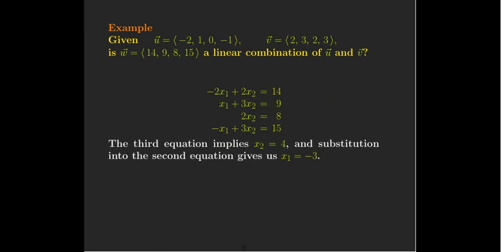That gives us a system of equations. I have four equations and two unknowns. Now this system of equations doesn't seem to be too difficult because the third equation is very easy to solve. And I get x2 equals 4. And then I just chose the second equation. I did a substitution. I replaced x2 with 4, and I found x1 equals negative 3.